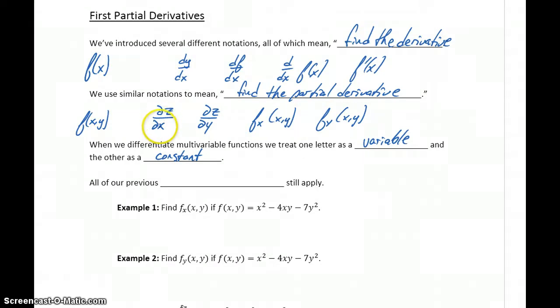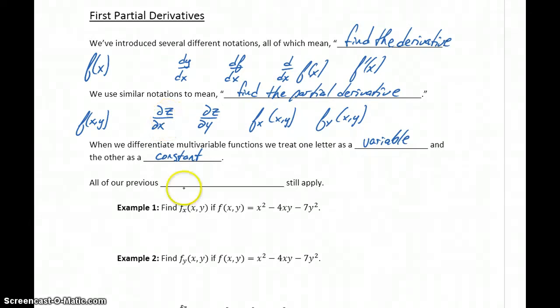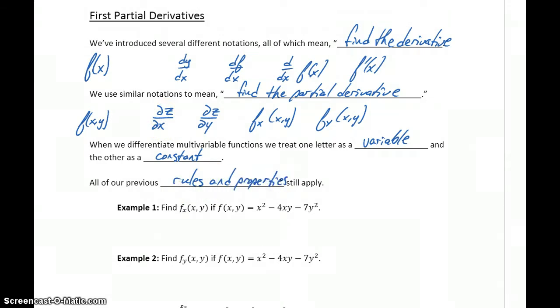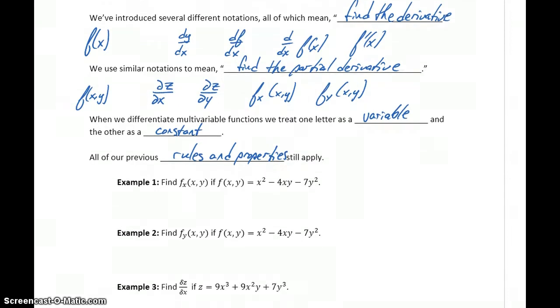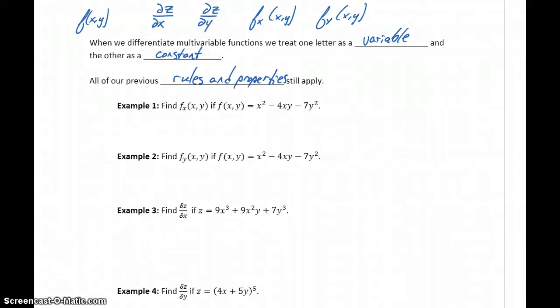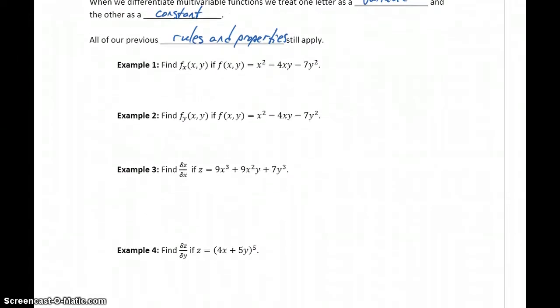If we're differentiating with respect to x, the only part we're differentiating is the x part. Things to keep in mind: all of our previous rules and properties still apply — meaning the product rule, the chain rule, the quotient rule, and all of our basic derivative properties for the standard types of functions. So let's look at a few examples.